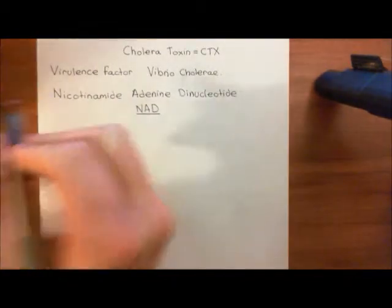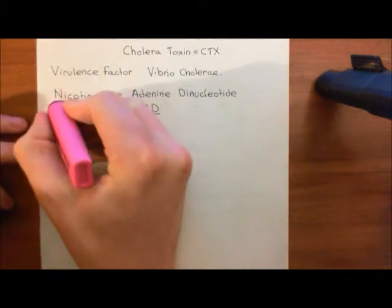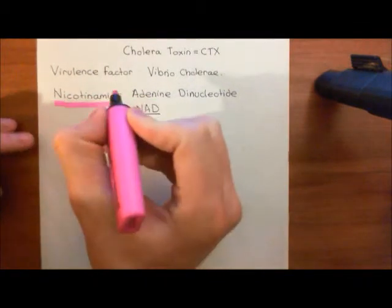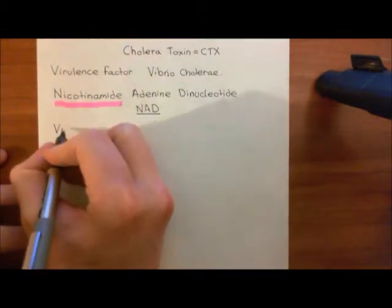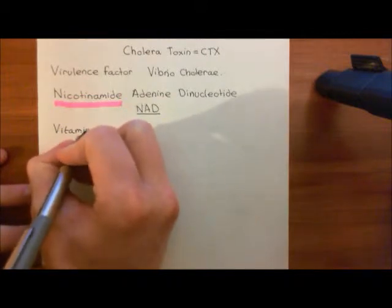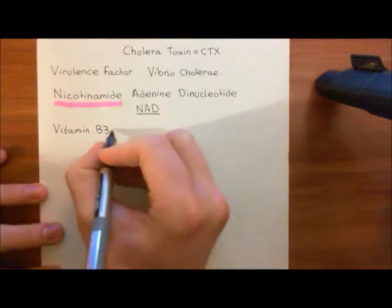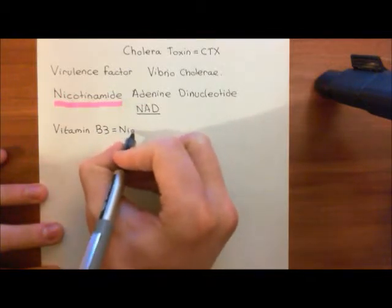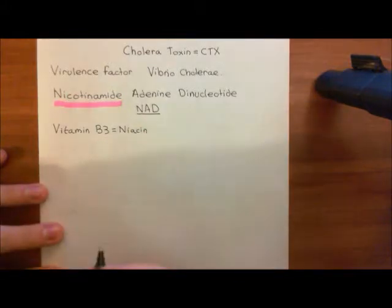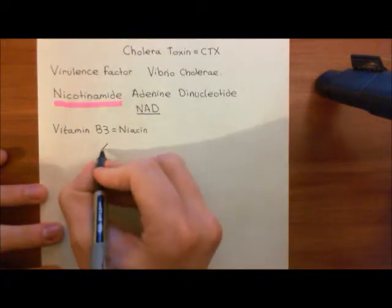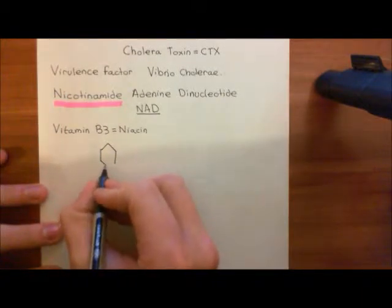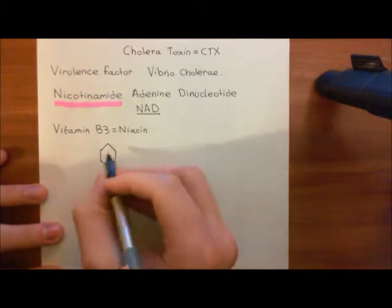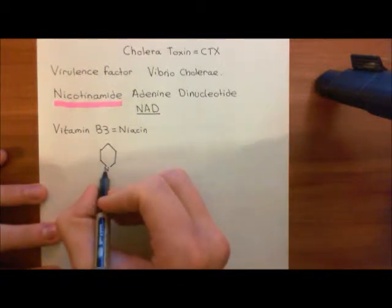We'll start with the structure of nicotinamide. Nicotinamide is very related to nicotine, but more closely related to vitamin B3, also called niacin. Niacin consists of a pyridine ring with a carboxylic acid group coming off the side. A pyridine ring is basically where you take a benzene ring — a six-membered ring — and replace one of the carbons with a nitrogen, giving you five carbons and one nitrogen with alternating double and single bonds.